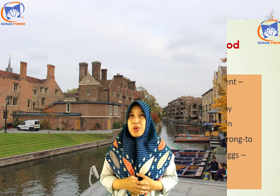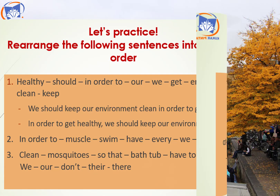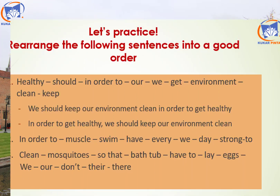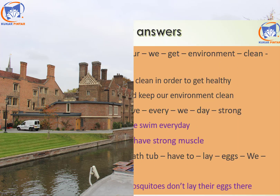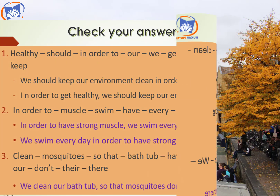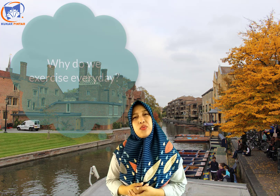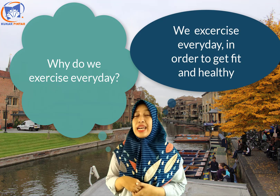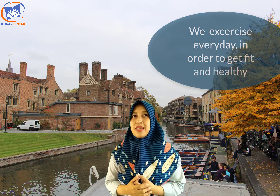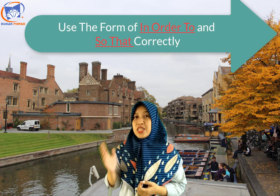Now it's time for you to practice forming sentences using 'in order to' and 'so that'. Number one has been done for you as an example. Watch the video to do the rest of the exercise. Now you can check your answers — did you get all the answers correct? In the following exercise, fill in the blanks with your own words. For example: 'Why do we exercise every day?' You can answer: 'We exercise every day in order to get fit and healthy.' Remember to use 'in order to' and 'so that' correctly.